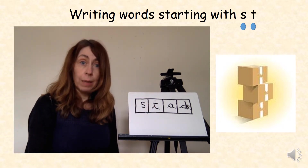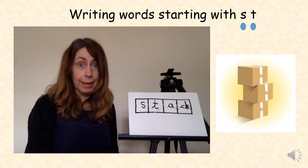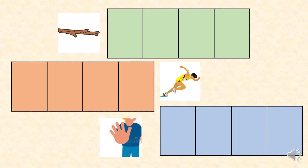Let's go and write some more words that begin with s and t. Here are some more words: stick, start, and stop. Don't forget to say the words first and use spread fingers to segment the word. Pause your video now and go and write the words.